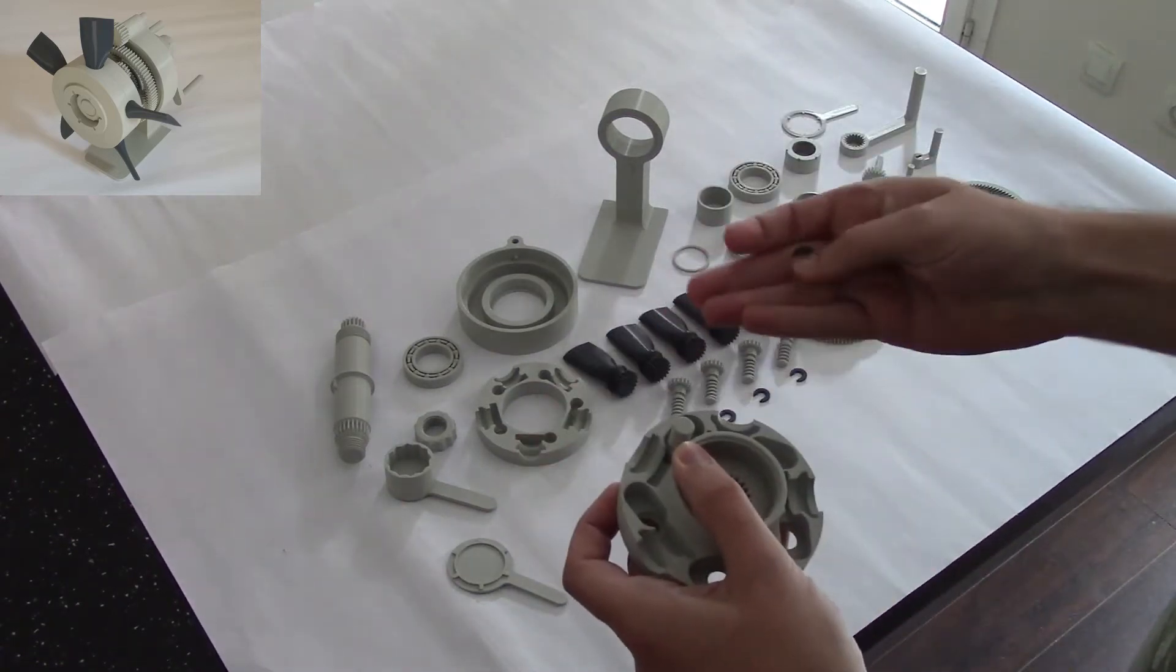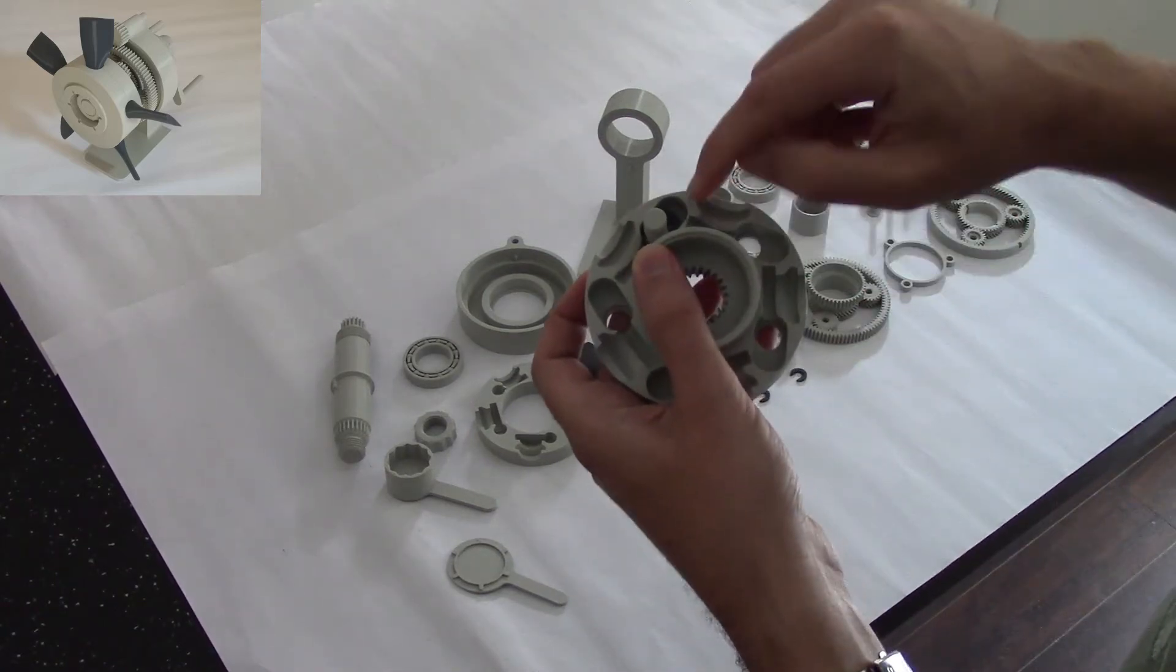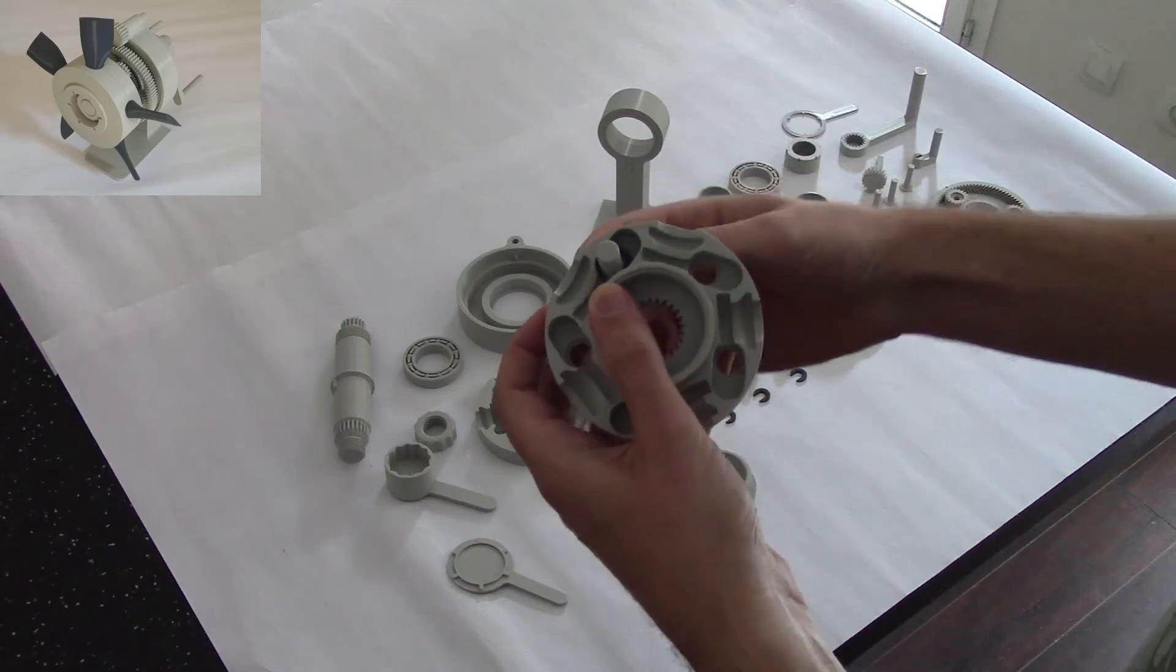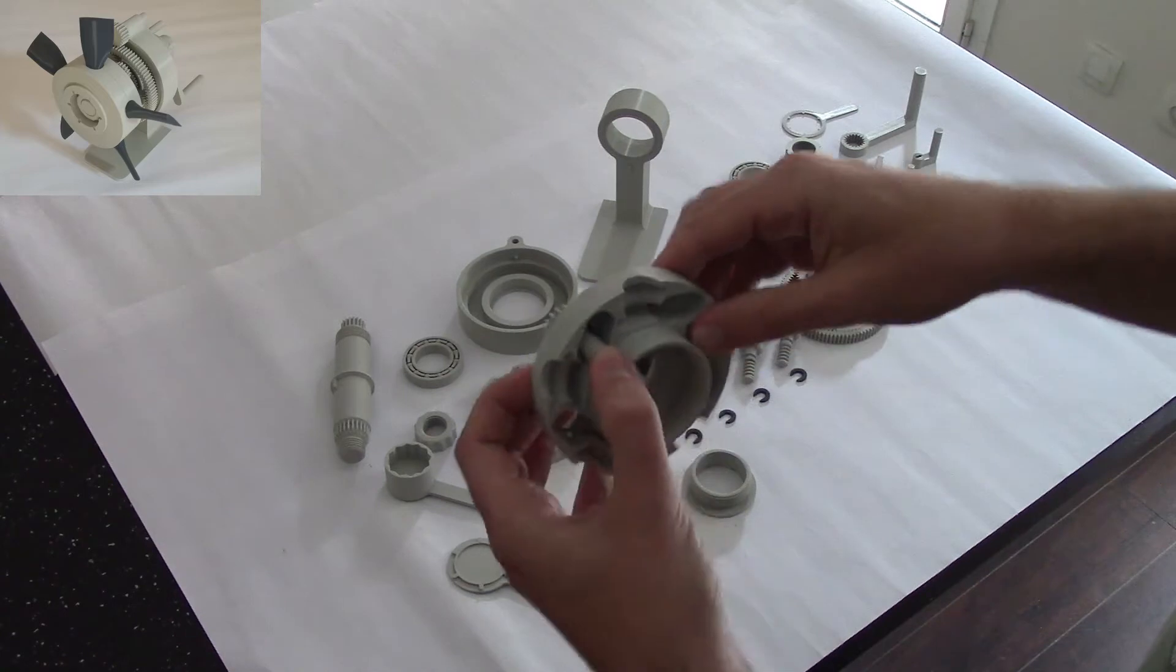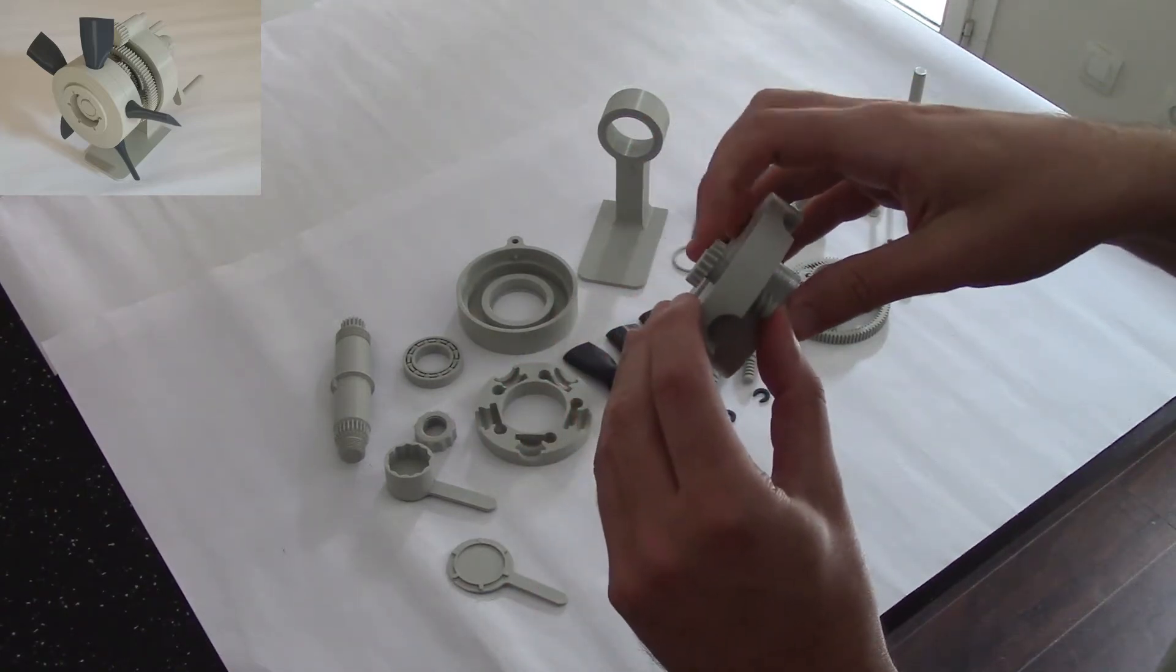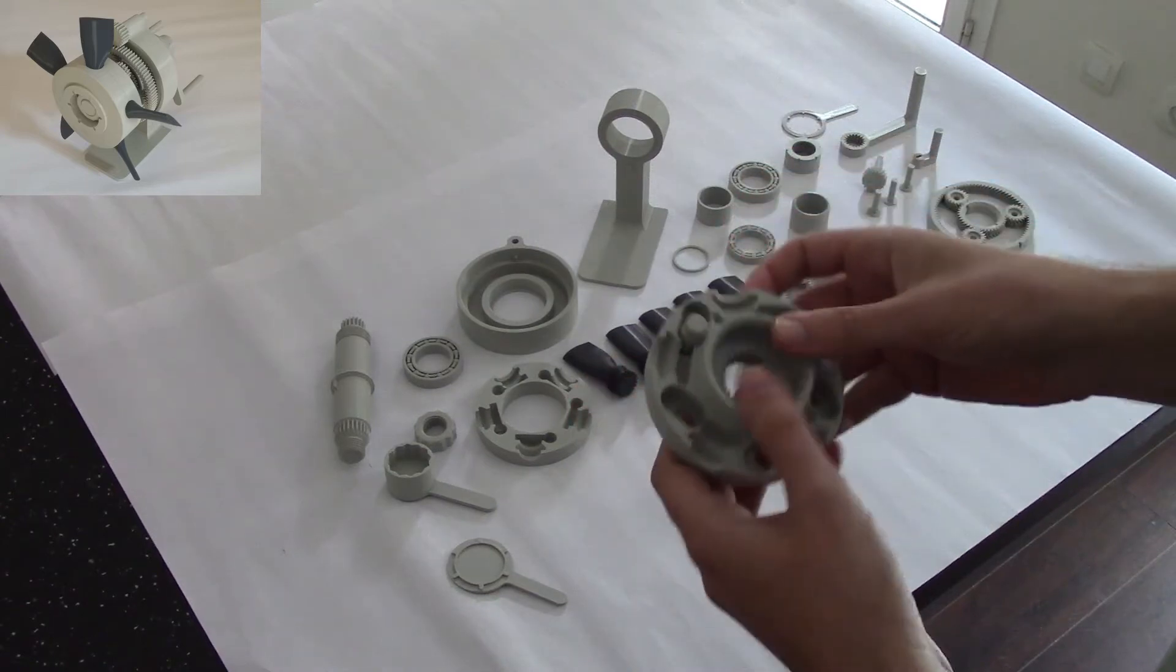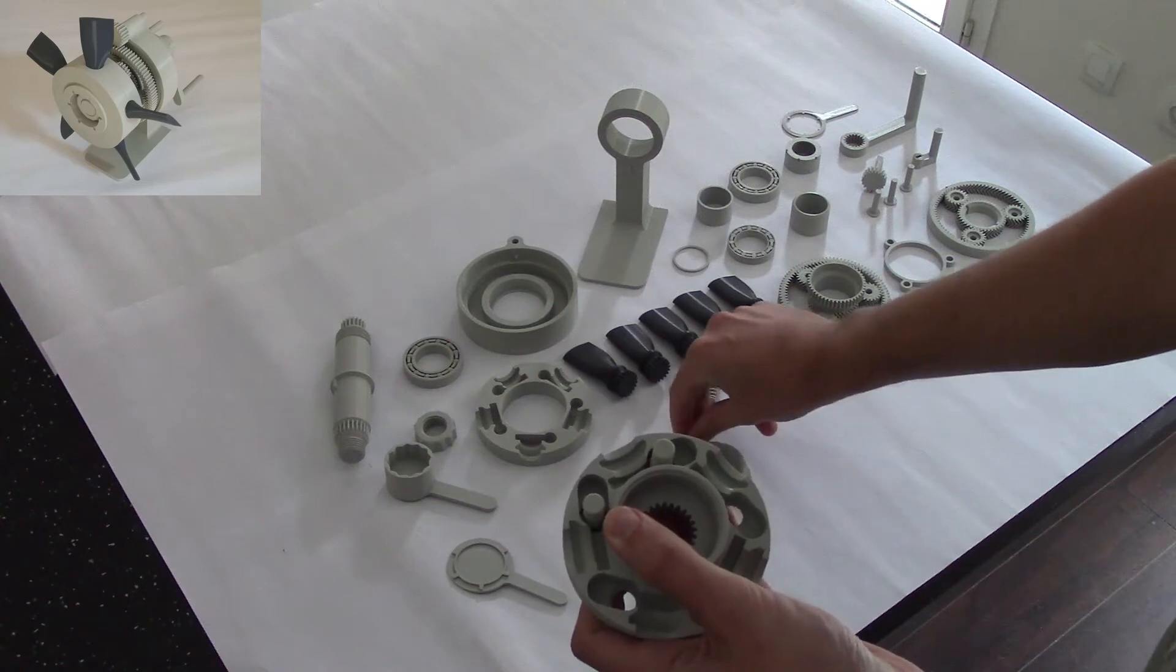You have to have the chamfered edge towards you when you do this, and then you jigger it slightly. Then if you push the worm gear, you have a five millimeter gap between the hub face and the spur gear. You can go ahead and do that for the five worm gears.